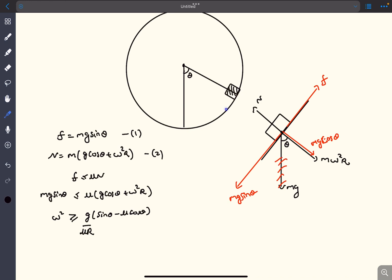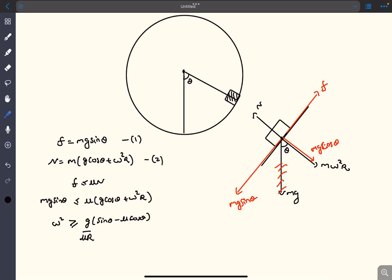If we can find out the maximum value of these individual omega limiting values then that would be the omega limiting for the entire vertical circular motion. What I'm trying to say is let's say if we take point 0.1, 0.2 and 0.3, at these points they will have different omega limiting values.